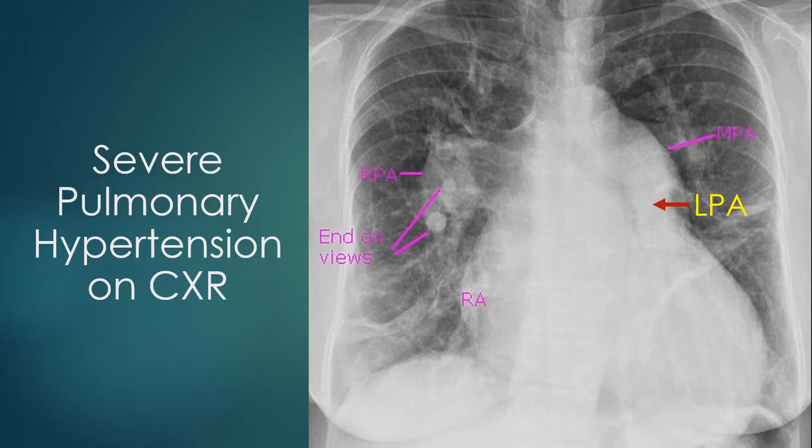The main pulmonary artery is prominent, and the left pulmonary artery can be seen descending within the cardiac silhouette along the left cardiac border, starting behind the main pulmonary artery. The right pulmonary artery is also dilated.